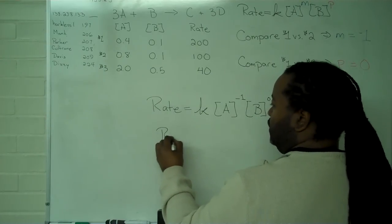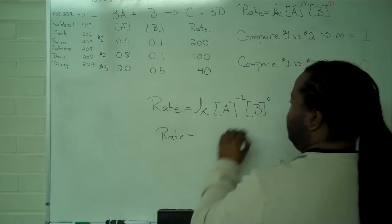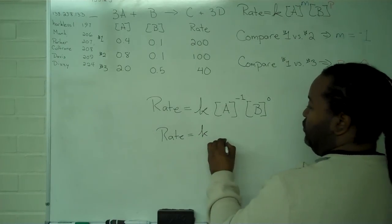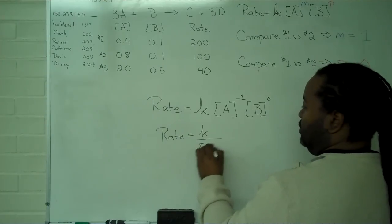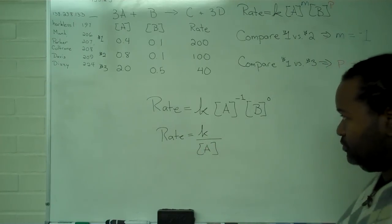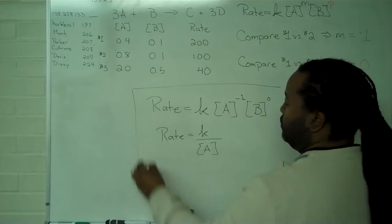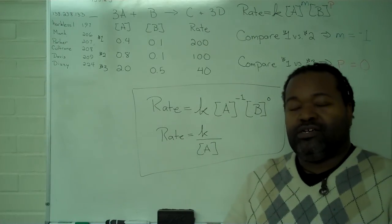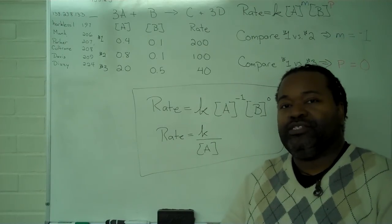If we want to step through the math and simplify that, we can acknowledge that raising anything to the 0 power just makes it 1. And A to the negative 1, we can place that in the denominator. Either of these is correct. The second one is just a simplified version. This is all found using the method of initial rates.